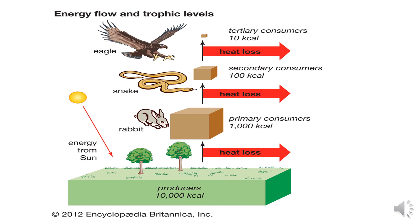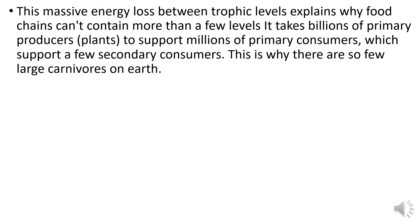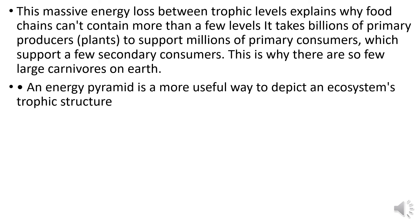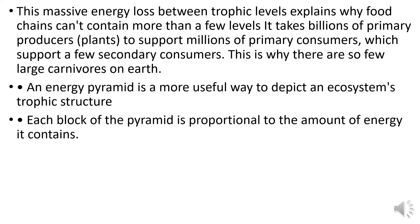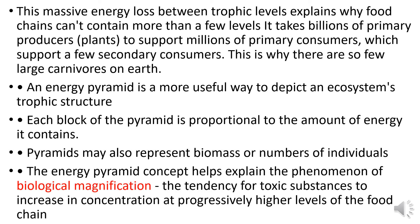Energy pyramids help explain the trophic structure of an ecosystem. The number of consumer trophic levels that can be supported is dependent on the size and energy richness of the producers' level. This massive energy loss between trophic levels explains why food chains can't contain more than a few levels — it takes billions of primary producers to support millions of primary consumers, which supports only a few secondary consumers. Pyramids may also represent biomass or number of individuals, and the energy pyramid concept helps explain biological magnification — the tendency for substances to increase in concentration at progressively higher levels of the food chain.